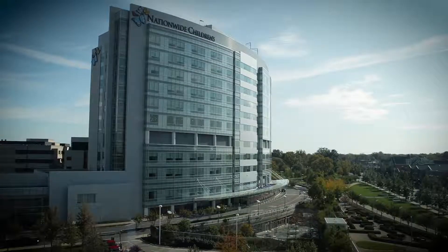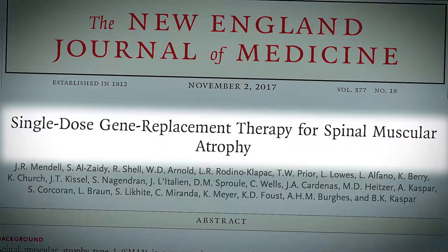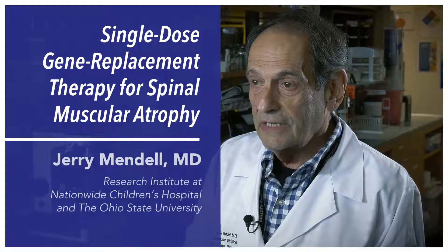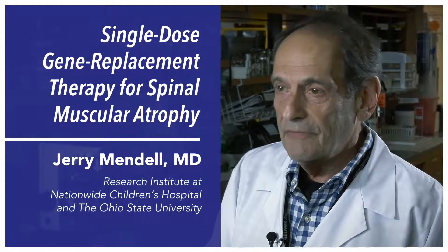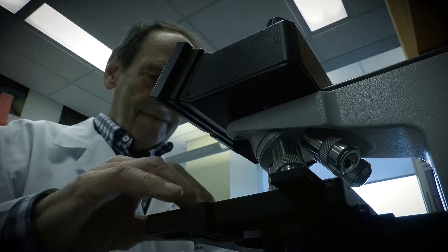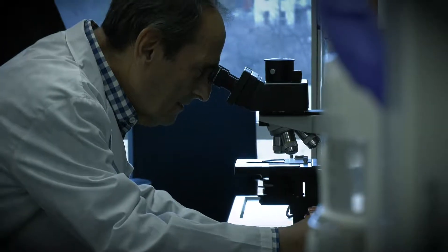At Nationwide Children's Hospital we recently completed a clinical trial in spinal muscular atrophy or SMA type 1. This is a disease that is devastating for infants and they lose their life by the end of year two. The disease is caused by the loss of the survival motor neuron gene.